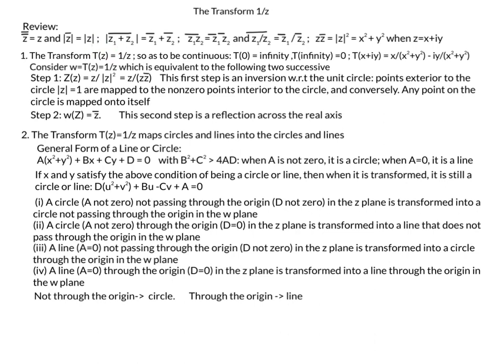In particular, t of z equals 1 over z is a composition of two functions. The first function, capital Z, takes the complex number and maps it to the complex number over its modulus squared, which equals z over z times z-bar. We will see that this first simplified function is an inversion with respect to the unit circle — points exterior to the unit circle are mapped to nonzero points interior to the circle, and conversely points interior are mapped outside. Any point on the circle is mapped to itself.